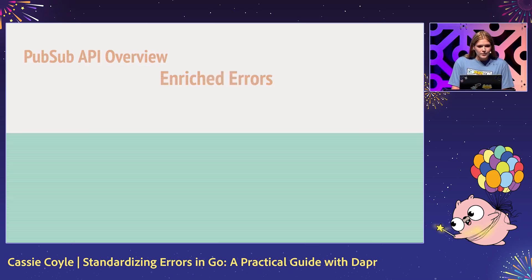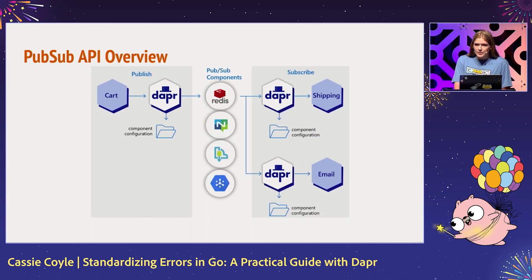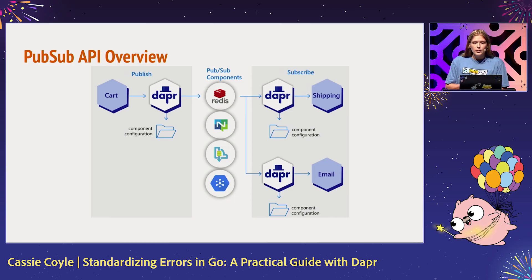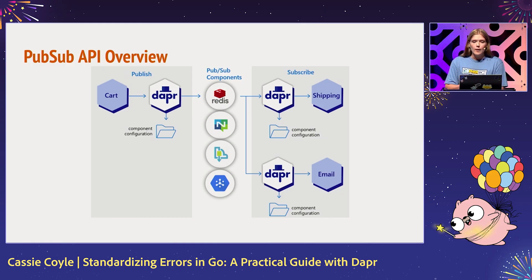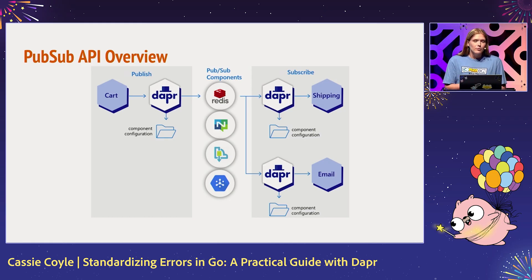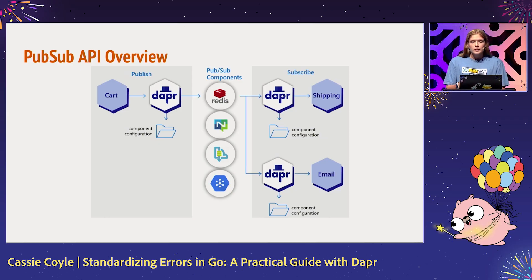Let's take a look at our enriched errors, starting with a PubSub API overview. On the left, we have a Dapr-enabled cart application publishing data to our message broker. Let's say we're using Redis there in the middle, which is a Dapr PubSub component. And then on the right, we have a shipping Dapr-enabled app, where Dapr is routing that data back to the app. You can tell we're in a distributed environment — it might be a simplified example, but you can see there are several areas where errors could occur, and we want to enable our users in those scenarios.